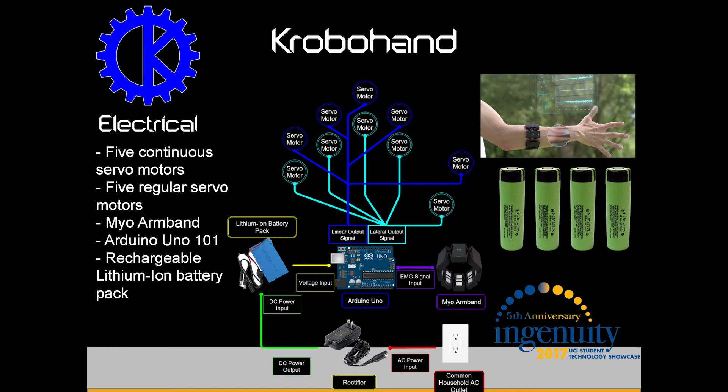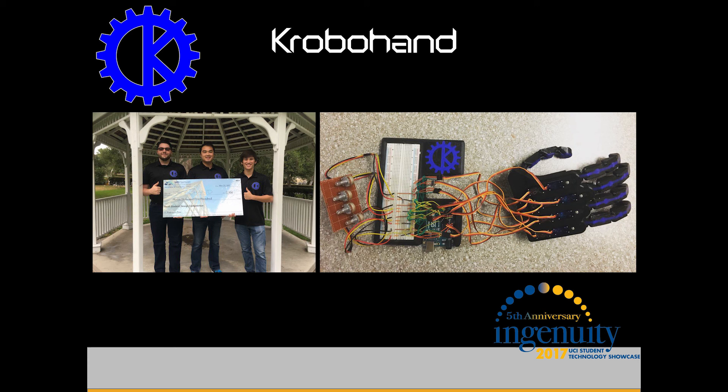Each CroboHand consists of five continuous servomotors for linear movement to close the fingers, and five regular servomotors for lateral side-to-side movement. The CroboHand will be controlled by a Myo arm band attached to the amputee's existing muscle groups, wirelessly sending the EMG signal via Bluetooth to an Arduino Uno 101, which translates that into either linear or lateral output movement. All of this is powered by a rechargeable lithium-ion battery pack that the amputee can easily plug into a common household outlet. I hope you enjoyed this short presentation on CroboHand, and we look forward to seeing you at our booth. Thank you.